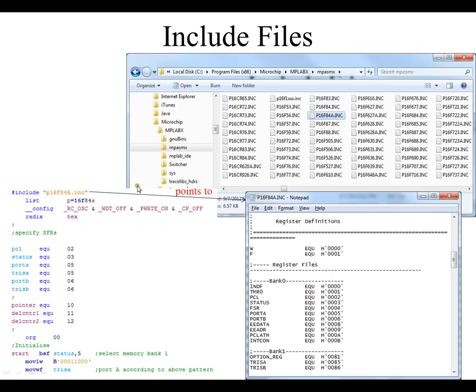Now if you add this include statement in your code, this text already exists. Now if you go to your C drive, program files x86, microchip, MPLABX, MPASMX, you'll see this list of files that has a P16F84A include file. If you open that file, you can see that it already has these statements inside of it.